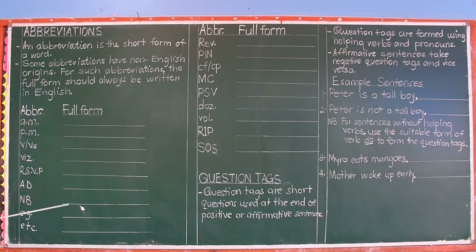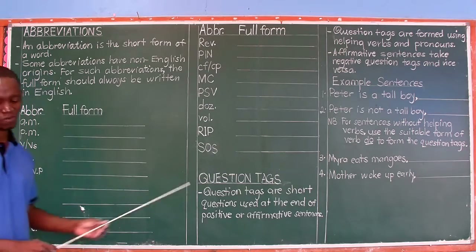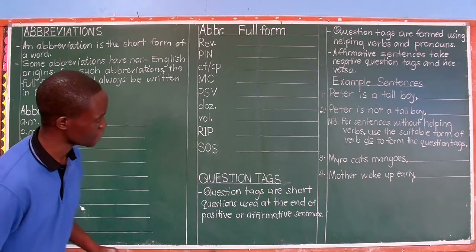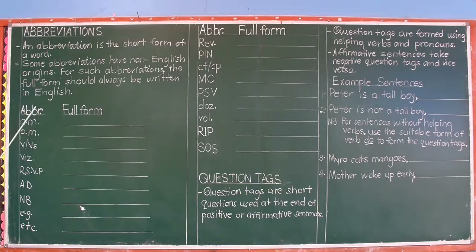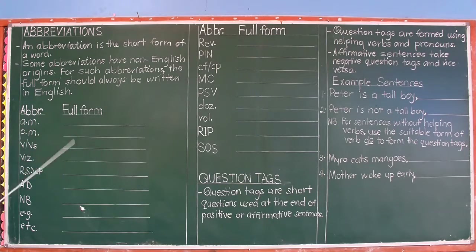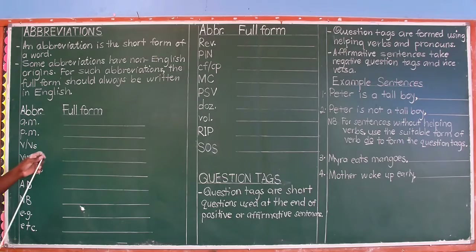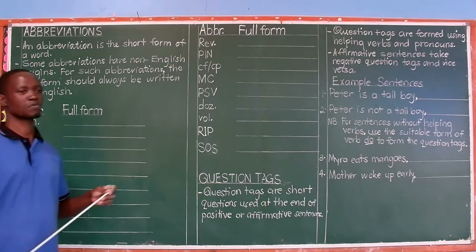Some of them are sampled here; the rest have been left out because we can't write everything on the board. We have the abbreviation here written in short form, then the full form beside it — follow and learn something. When you look at AM, it came from a different language, not English. Originally it was a Latin abbreviation.